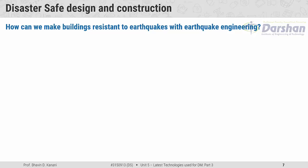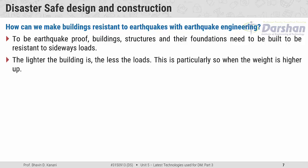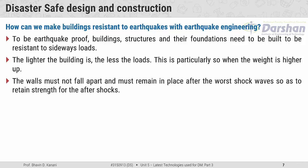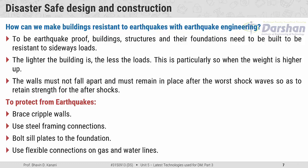How can we make buildings resistant to earthquakes with earthquake engineering? To be earthquake-proof, buildings, structures, and entire foundations need to be built appropriately. The lighter the building, the less the loads — this is particularly so when the weight is higher up. The walls must not fall apart and must remain in place after the worst shock waves so as to retain strength for aftershocks. To protect from earthquakes: brace cripple walls, use steel framing connections, bolt steel plates to the foundation, and use flexible connections on gas and water lines.